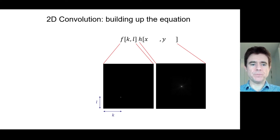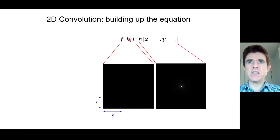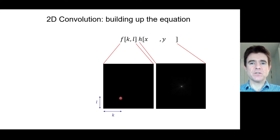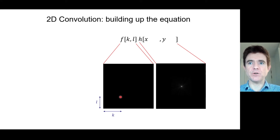Now let's get to convolution. The back-projected images are built up as follows: we have a true radiotracer concentration F as a function of spatial coordinates X and Y, where we label the X coordinate by dummy variable K and the Y coordinate by dummy variable L. For a single point source at position (K, L), we need to take the point spread function H(X,Y) — which is centred in the field of view — and position it at the location of that point source by shifting the independent variables X and Y.